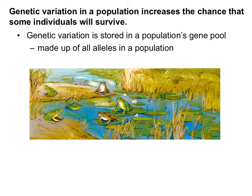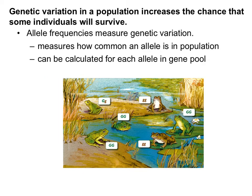Genetic variation is stored in a population's gene pool — a term you definitely need to know. It is made up of all the alleles in the population. The phenotype is brown and green, while the alleles are the actual versions of the genes, like big G and little g. Allele frequencies measure genetic variation — we can actually see how common an allele is in a population, and this can be calculated for each allele in a gene pool.